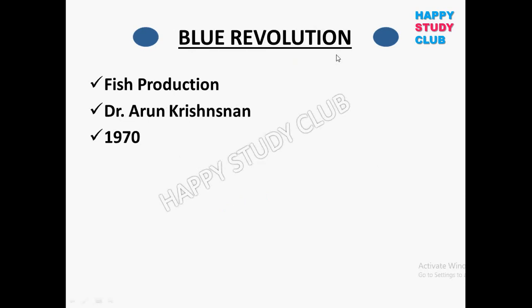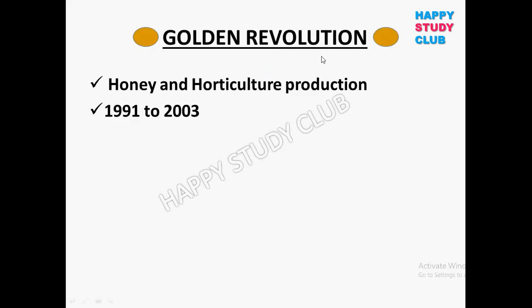Next is the Blue Revolution. The Blue Revolution is for fish production. The father of the Blue Revolution is Dr. Arun Krishnan, and it was introduced in 1970.